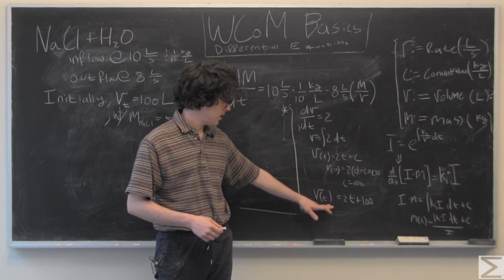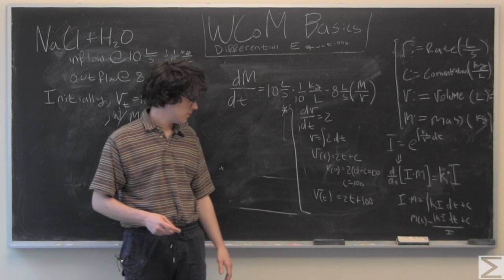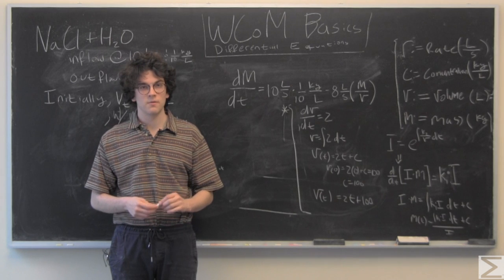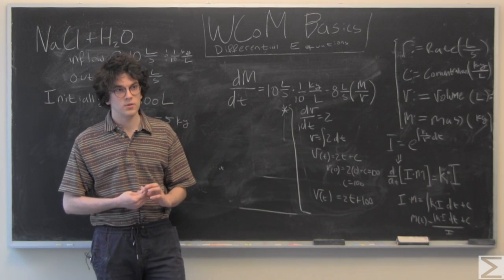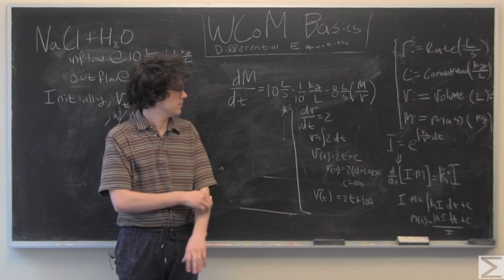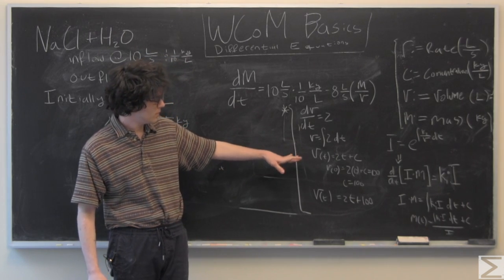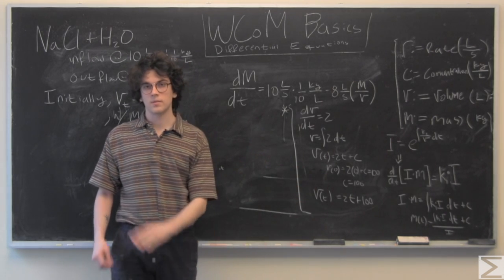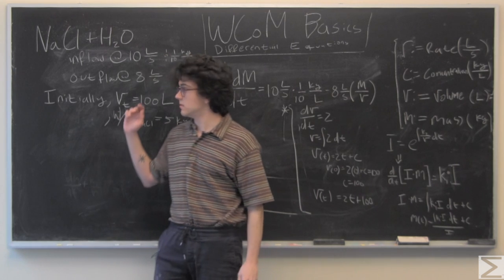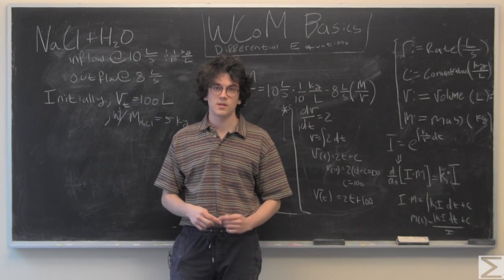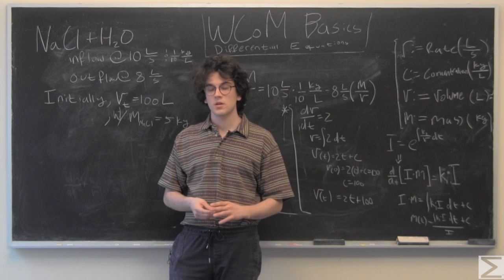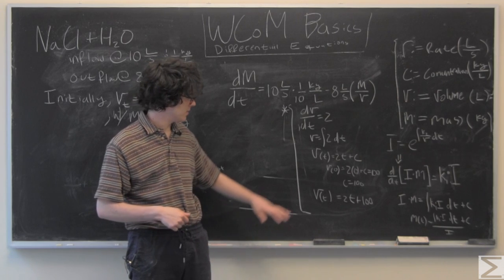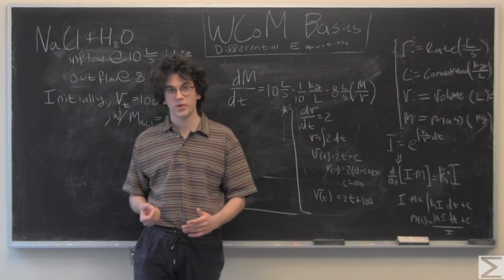We also notice that volume is not constant. So, the rate of change of volume is 2 units, which is liters per second. So, we integrate, and right here is when I have used our initial condition, saying that initially the volume of the tank at time 0 is equal to 100 liters. I've used that to solve for c. So, we have our volume as a function of time is equal to 2t plus 100.